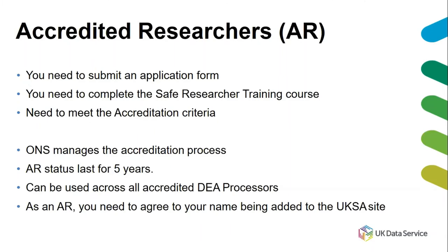Let me explain what we mean by accredited researcher. It's not actually a very complex process — you need to submit an application form and complete the safe researcher training course. You do have to spend a little bit of time completing that form fully; that's probably my number one tip. The Office for National Statistics, the ONS, has been given the authority to manage this accreditation process. Importantly, this is something you only need to do once every five years — not every project or every year. Your status lasts for five years, and at the end you'll need to refresh it.